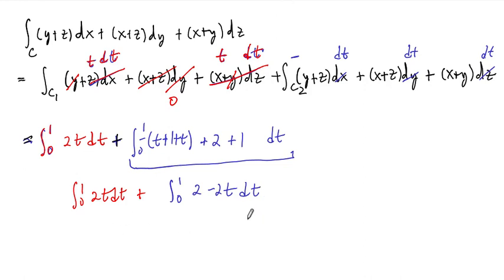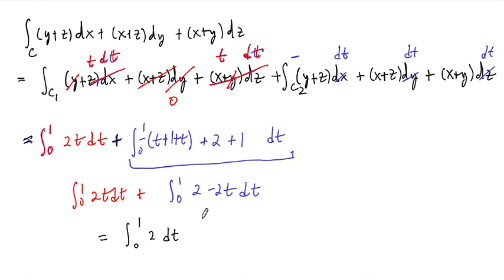Notice that once we're done, the integral itself is a breeze — these two can now be added together. They have the same bounds and the same differential. Adding them: ∫₀¹ 2t dt + ∫₀¹ (2 − 2t) dt = ∫₀¹ 2 dt = 2.